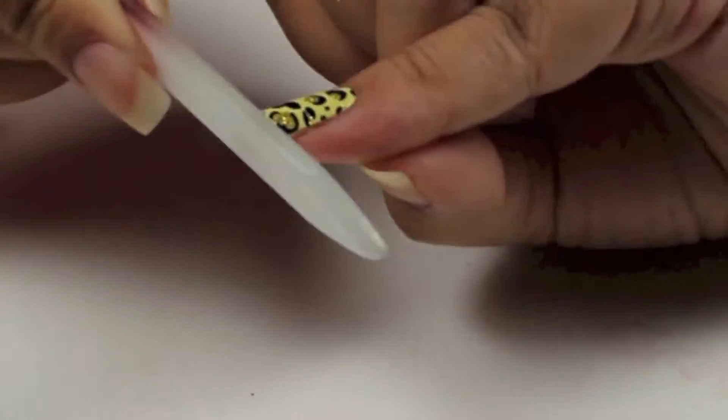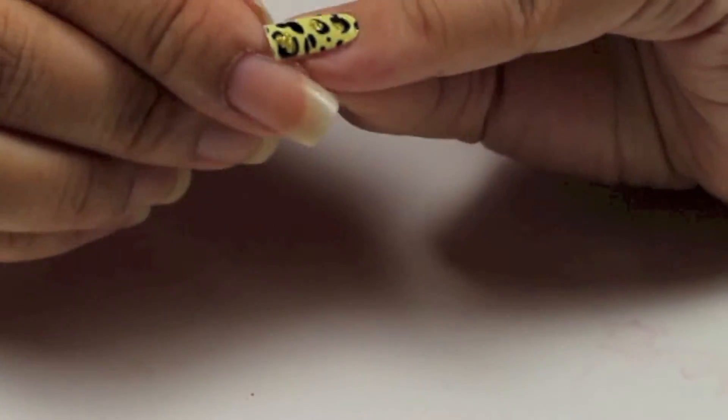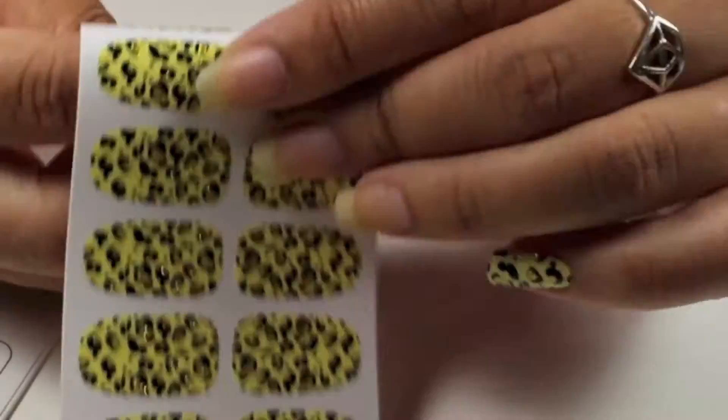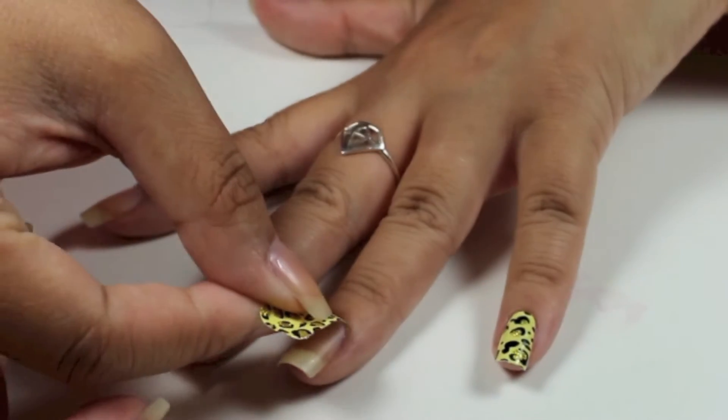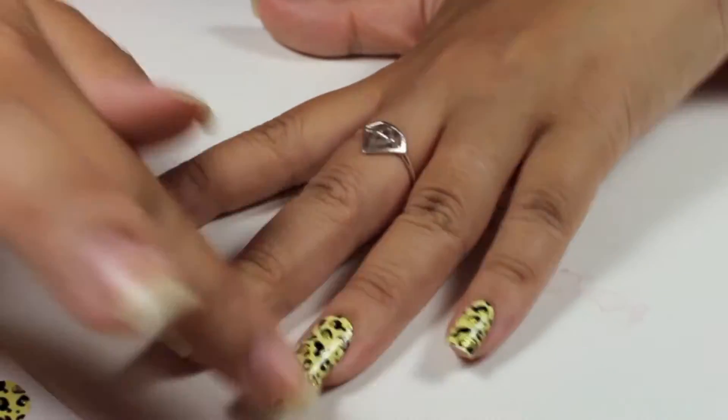Do not use a top coat because when I use a top coat, it ruined the design and smeared. I'm going to show you how I did it again on my ring finger in fast forward motion.